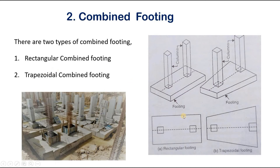There are mainly two types of combined footing: rectangular combined footing and trapezoidal combined footing. If the columns carry equal loads, the combined footing is rectangular in shape — that is a rectangular combined footing. If the columns carry unequal loads, the footing is trapezoidal in shape — that is a trapezoidal combined footing. Sometimes it may be required to provide a combined footing for a column and a wall.